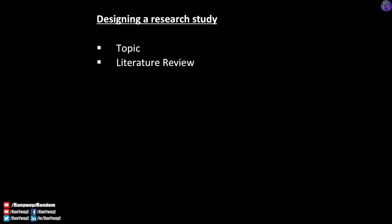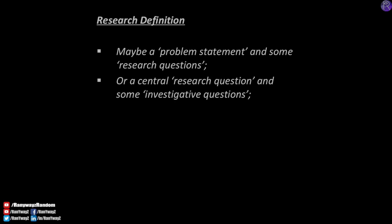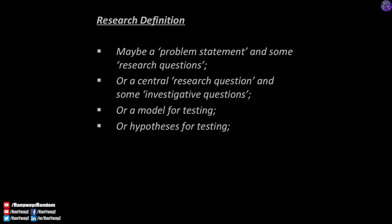After we have conducted our preliminary literature review for the proposal, we can decide on what specifically this proposed study is going to investigate. In other words, at this point we are going to define our research study. Research definition can come in different forms — sometimes it is formulating a problem statement and research questions, or developing a central research question with investigative questions, or conceptualizing a model for testing, or developing hypotheses for empirical testing, or a combination of these. The idea is to clearly define what this proposed study is going to investigate.